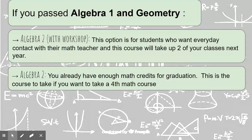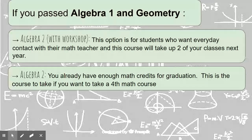The other option is to take just Algebra 2 without workshop. You already have enough math credits for graduation. This is the course if you want to take a fourth math course and you're looking to get into college, and if your college requires Algebra 2, then that's a course that you can take. But that class meets every other day.